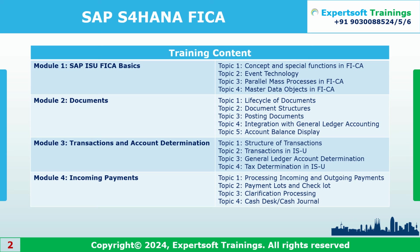What are the master data, business master data we have in FICA? What are the events — the FQ events which get triggered whenever a functionality is called? So what are the FQ events which are called in the background?